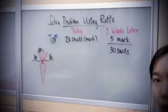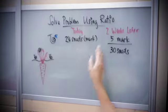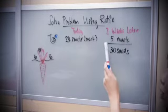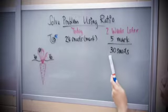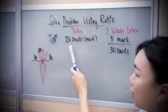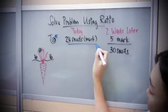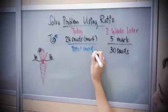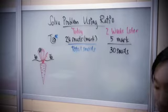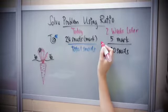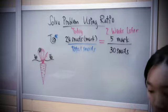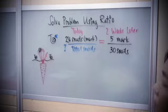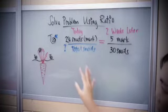Are you able to notice there are two ratios? So I have one happening which is today and one happening which is two weeks later. Two weeks later, I found out there's a ratio of five marked snails to the total snails I collected. Here I have another ratio: 24 marked snails to the total snails in the farm. If I put two ratios together and they are proportional, I can add an equal sign and solve for the unknown.